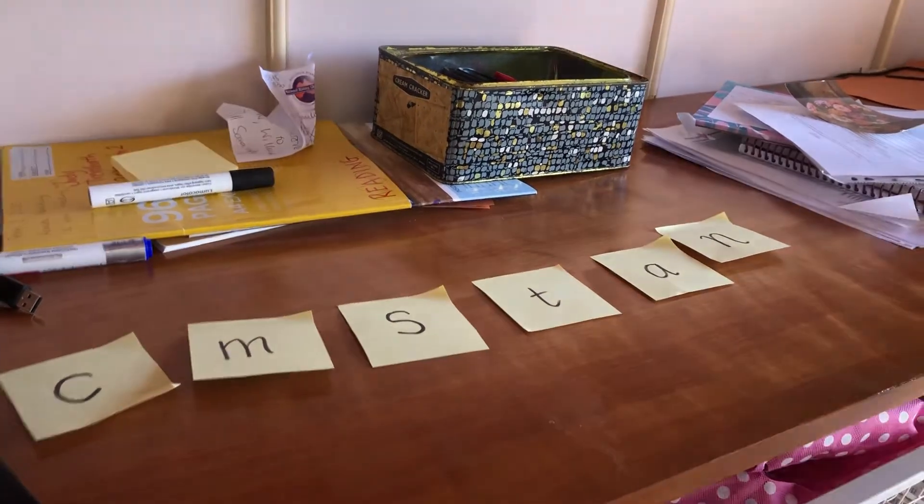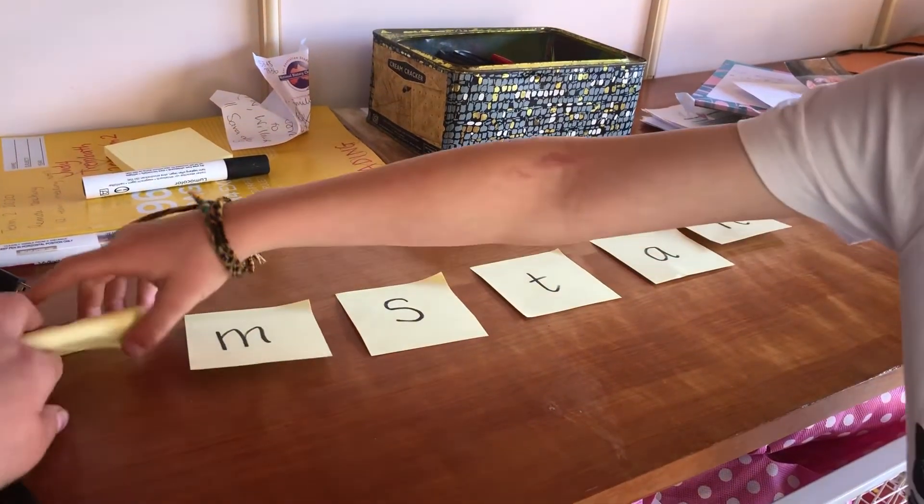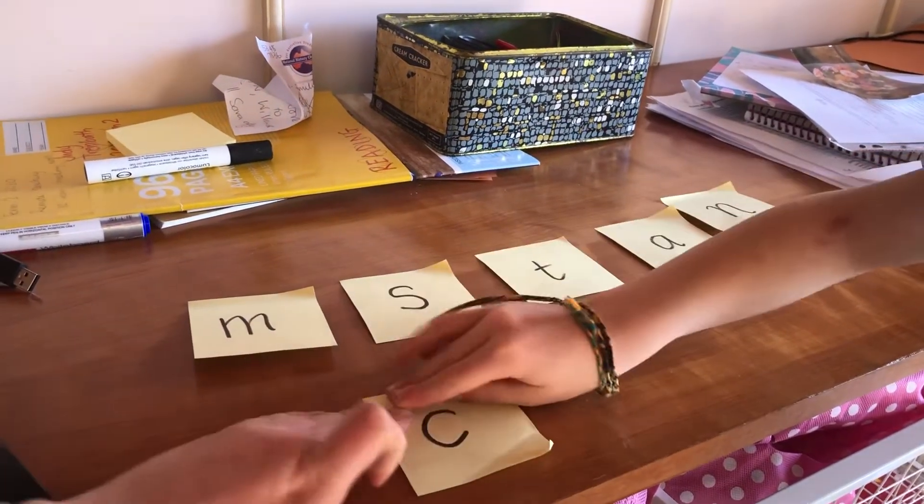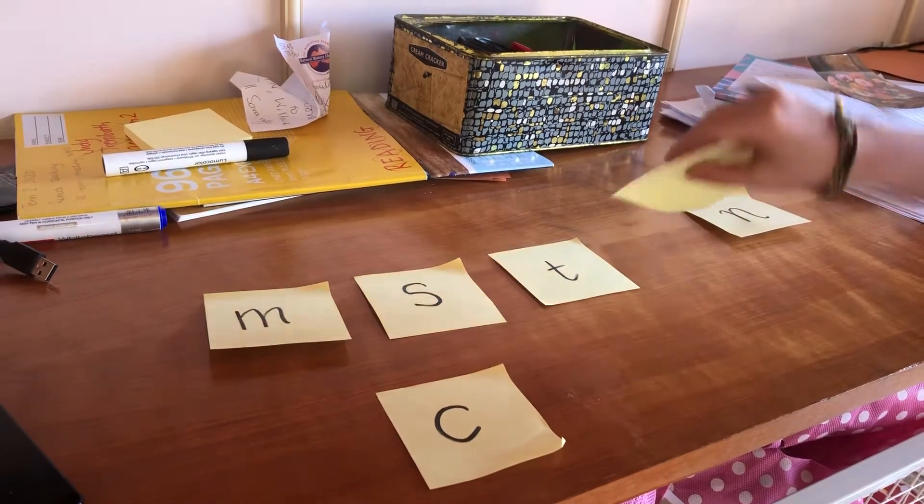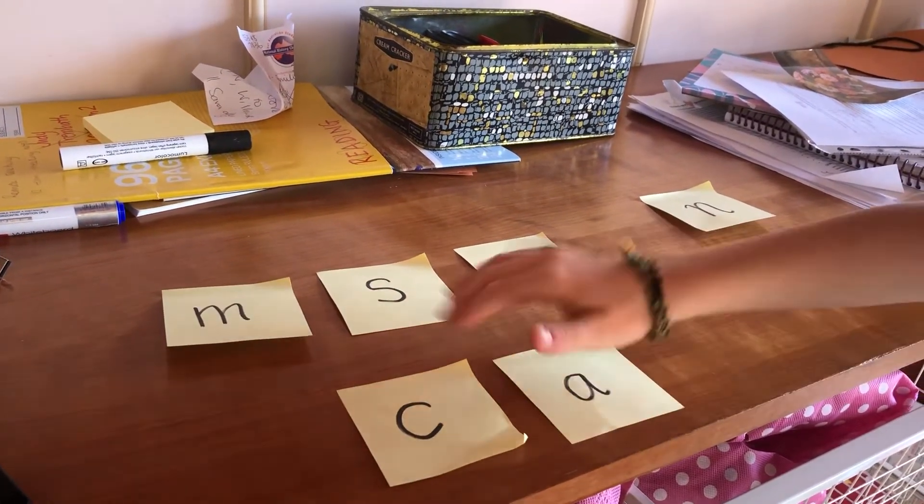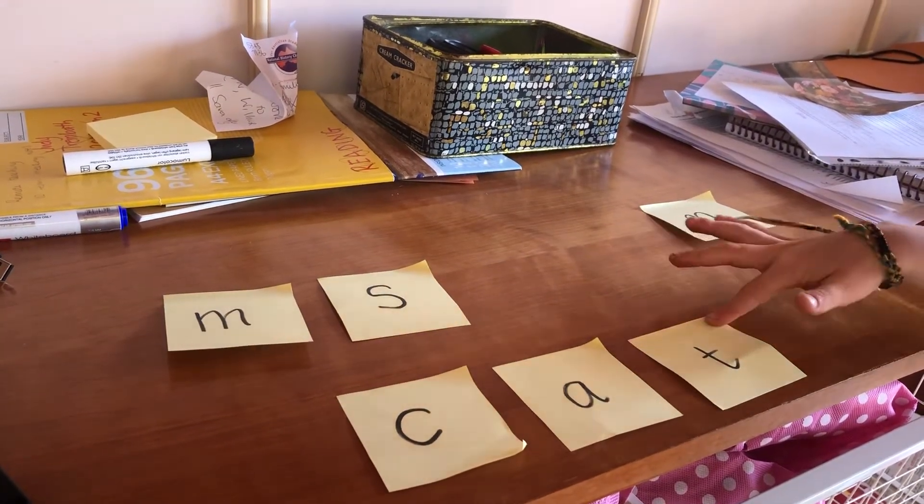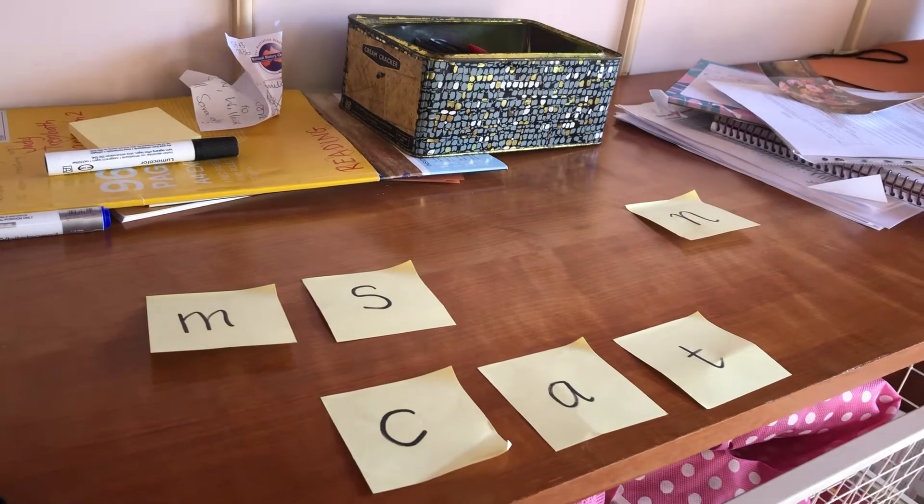Can you spell cat with those? K. Yep, so pick it up and put it right here. K. A. Good boy. T. Good boy. So what word is it? Cat. Good boy.